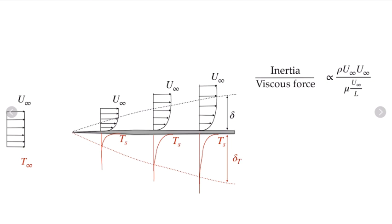If we look at the ratio of the inertia force to the viscous force, we get rho u-infinity squared over this mu u-infinity L. Simplifying that, the ratio of the inertia to the viscous force is proportional to rho u-infinity times L divided by the dynamic viscosity mu. This is the quantity that's defined as the Reynolds number.